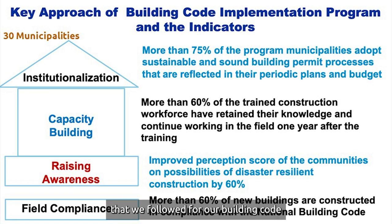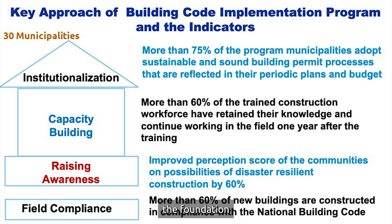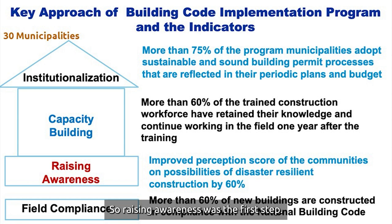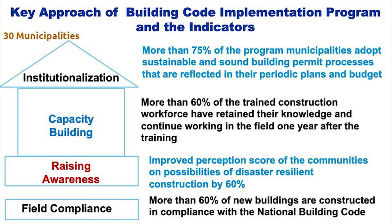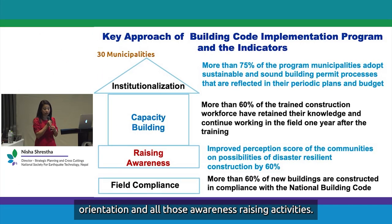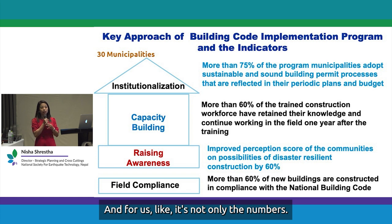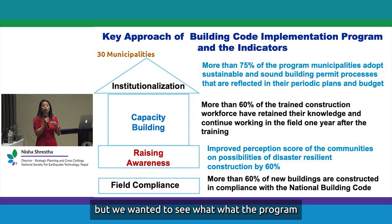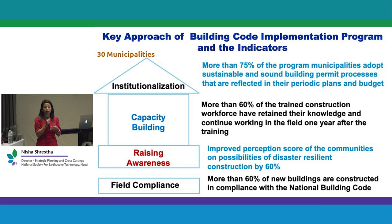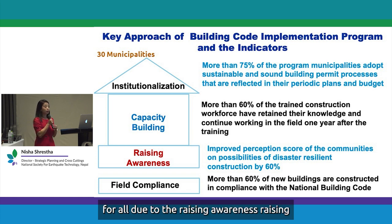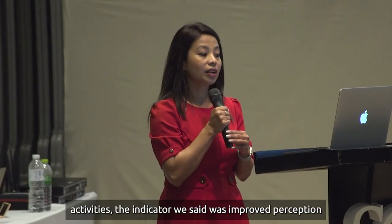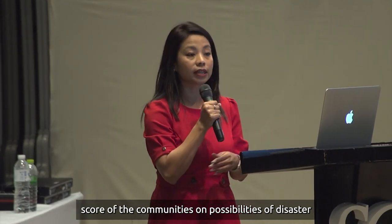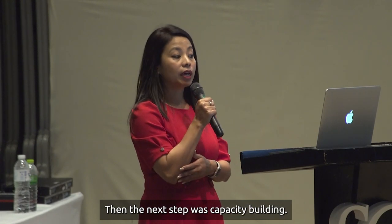This is the approach we followed for our building code implementation program. To build a safe house, we thought the foundation is raising awareness of people on how and why to build a safe house. For that, we developed various orientation programs, mass-based community awareness programs, media campaigns, and other awareness-raising activities. We don't only count numbers — we wanted to see what change of behavior the program interventions brought. To measure that, the indicator we set was an improved perception score of communities on possibilities of disaster-resilient construction, with a target of 60%.